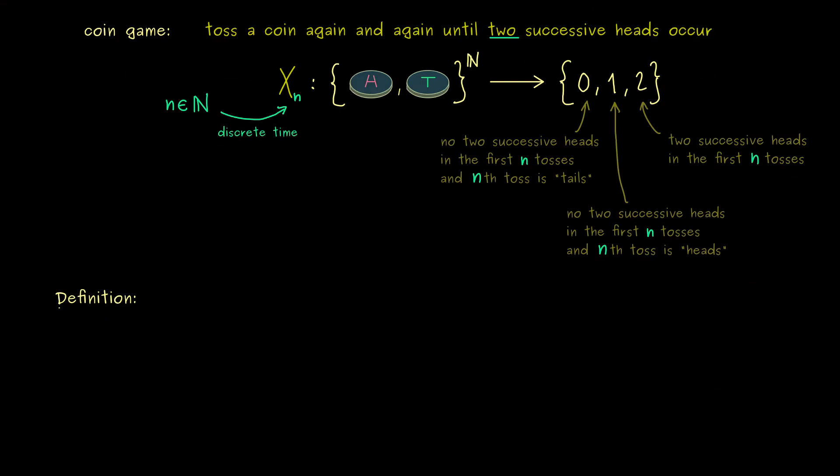So let's write down how we put random variables in a row. So first what we have to fix is an arbitrary set and let's call it T. So it could be any set and often our interpretation is that this is the set of time points.